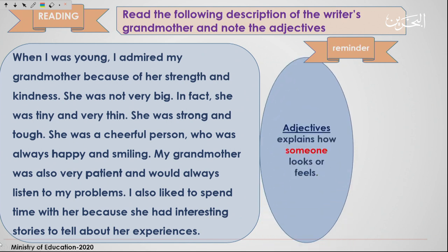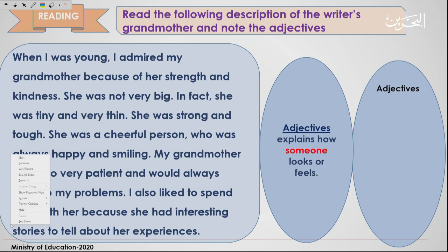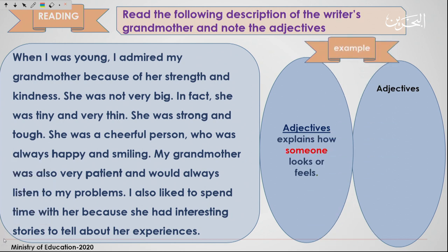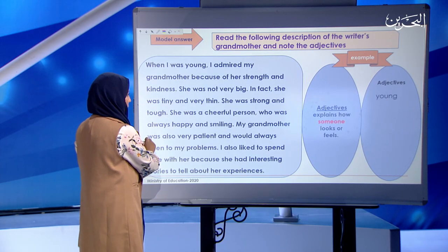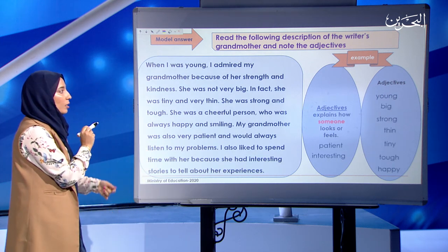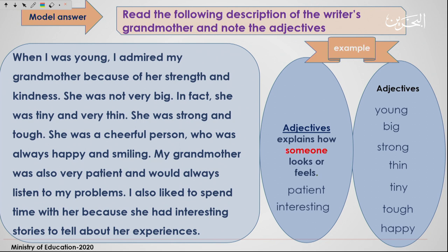Adjectives explain how someone looks or feels — I'll give you a hint: 'young' is one example. Time is up; let's check the answers. The adjectives are: young, big, strong, thin, tiny, tough, happy, patient, and interesting. So when describing someone, you're telling us how he or she looks and feels.